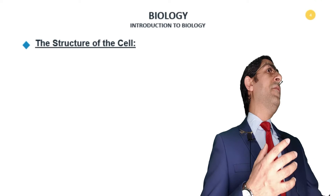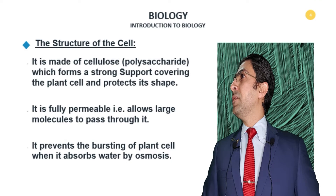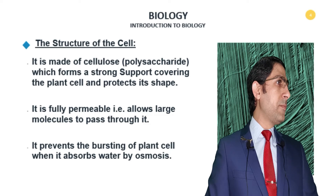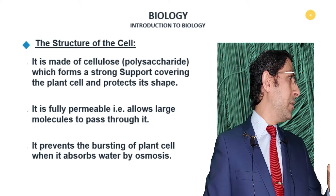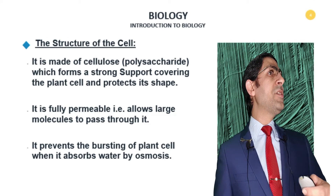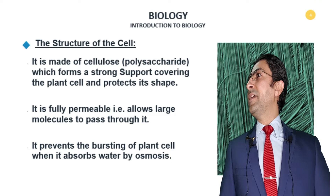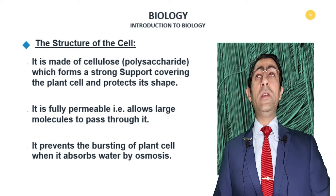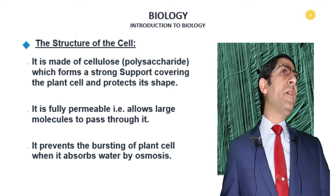A quick difference between the animal and plant cell: in the plant cell, the nucleus is in the center, while in the animal cell it is lateral. Chloroplasts are present in the plant cell while absent in the animal cell. The vacuole is very large in the plant cell, but very small and scattered in the animal cell — very small food vacuoles.